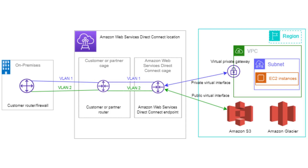Once the connection is established, a Direct Connect Gateway is created in the AWS cloud. This gateway provides access to various AWS services such as Amazon EC2, Amazon S3, and Amazon VPC. A Virtual Interface (VIF) is created that connects the customer data center to the AWS services via the Direct Connect Gateway, allowing for a private and secure connection between the customer data center and AWS services.